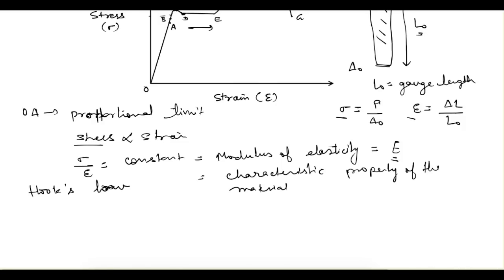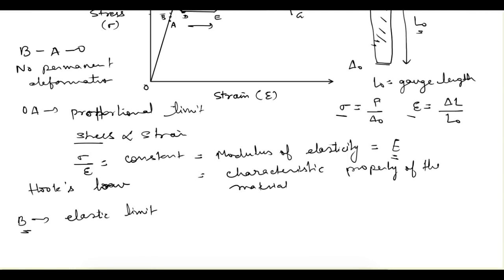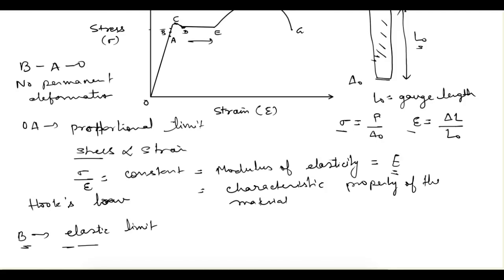After point A, we have another point B which defines the elastic limit. What elastic limit means is that if we unload the specimen at point B, the unloading curve will follow B, A, O — meaning no permanent deformation will take place in the specimen. Between A and B, the stress is not linearly proportional to strain; it is proportional, but not linearly.